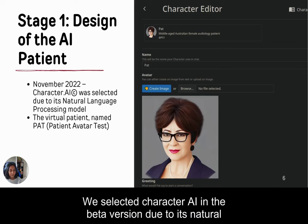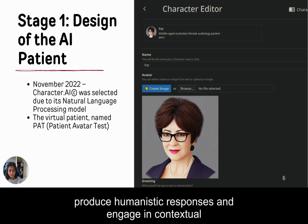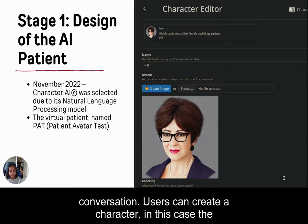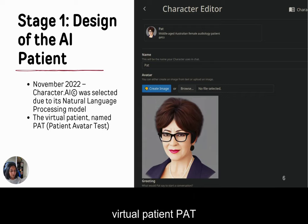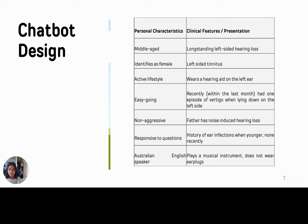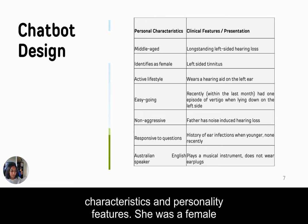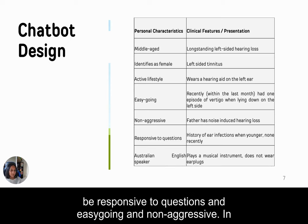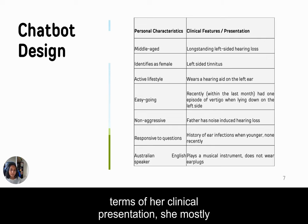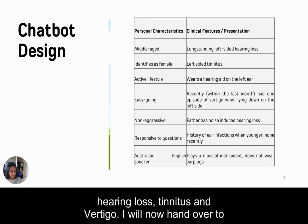We selected Character AI in the beta version due to its natural language processing model. It's a neural language model that can produce humanistic responses and engage in contextual conversation. Users can create a character — in this case a patient who is coming to see an audiologist — and we call the virtual patient Pat. Pat was defined with the following clinical characteristics and personality features.